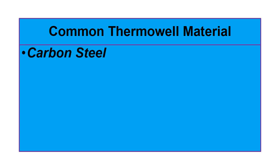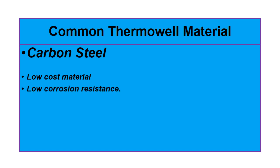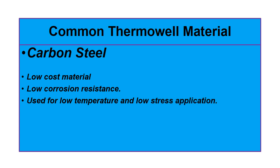The first material we are going to discuss is carbon steel. Carbon steel is a low cost material with low corrosion resistance. It can be used for low temperature and low stress applications. The carbon steel can be used for a maximum temperature up to 530 degrees centigrade.